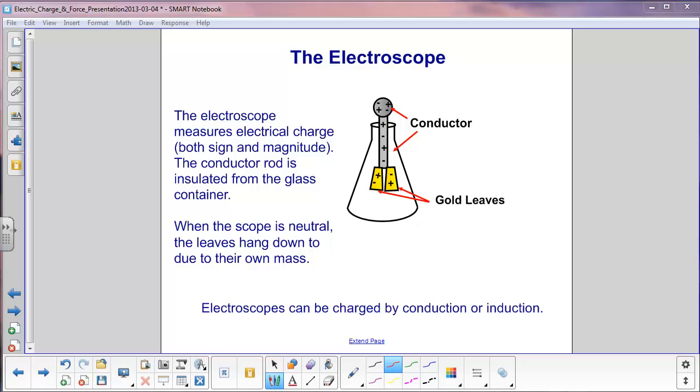Electroscopes come in various shapes and sizes. This is a fairly common one. We start with a glass container here and inside of it we have a metal conductor and we have a rubber stopper here which will insulate the conductor from the glass and hence from the ground, and two tiny gold leaves here with very little mass.